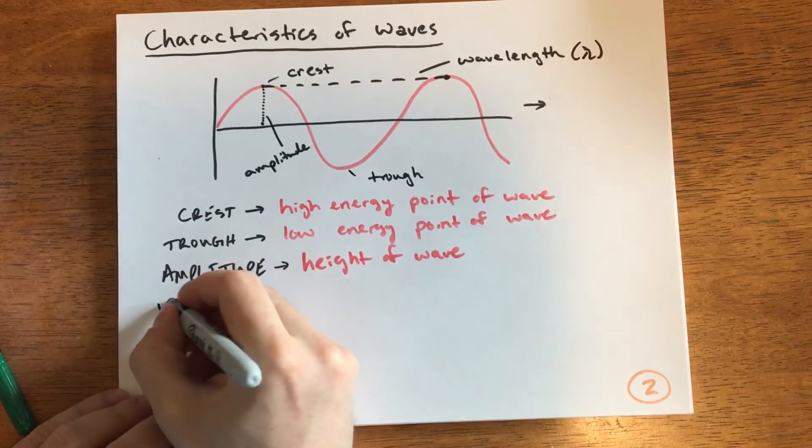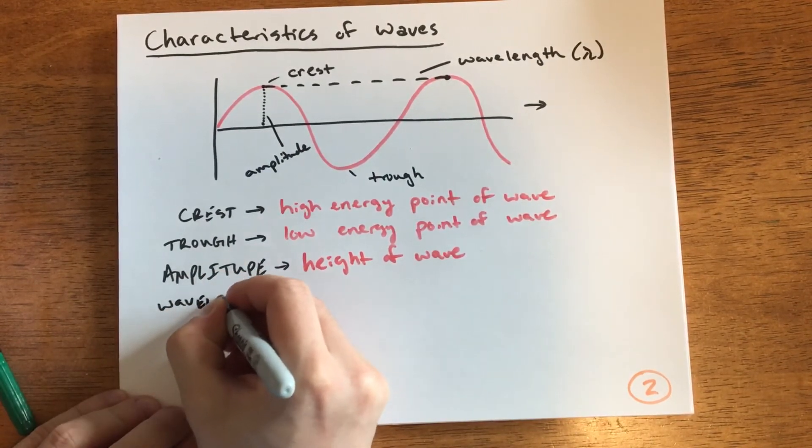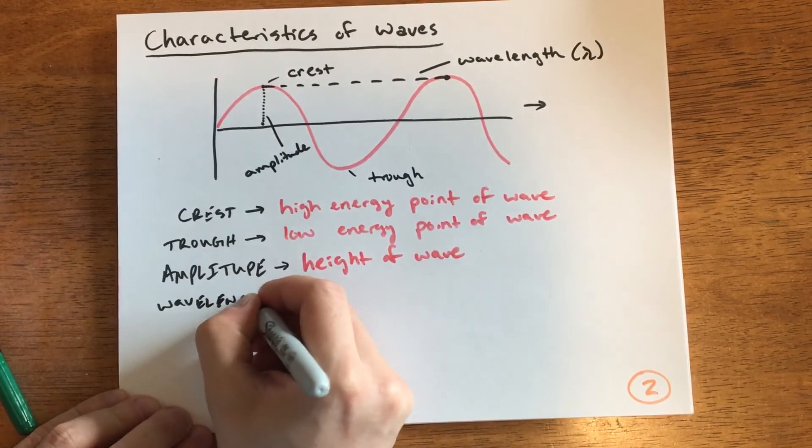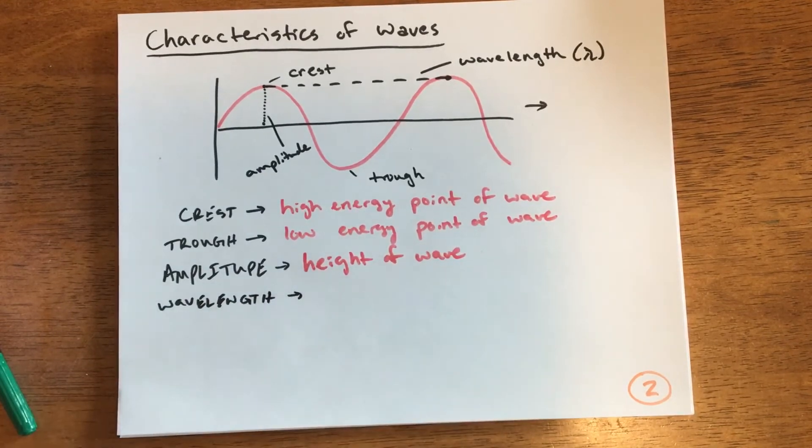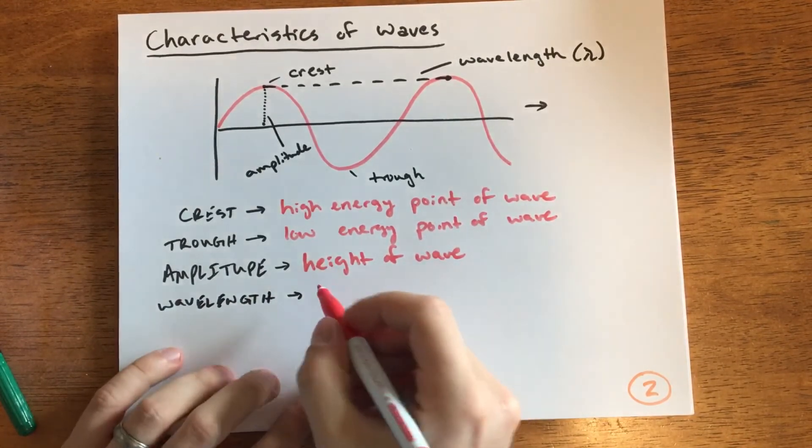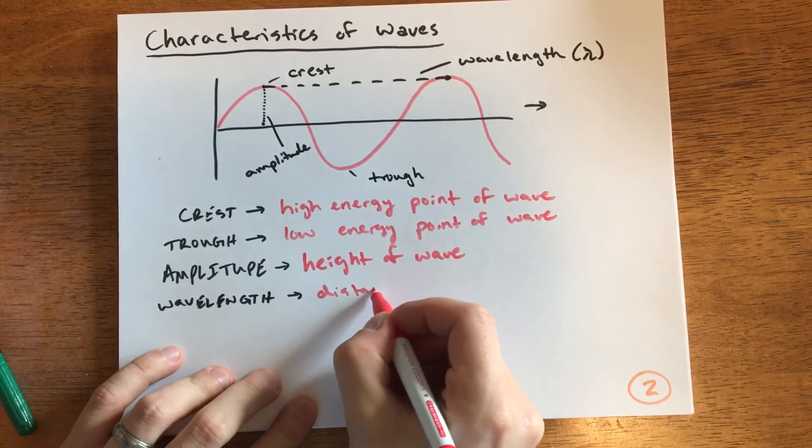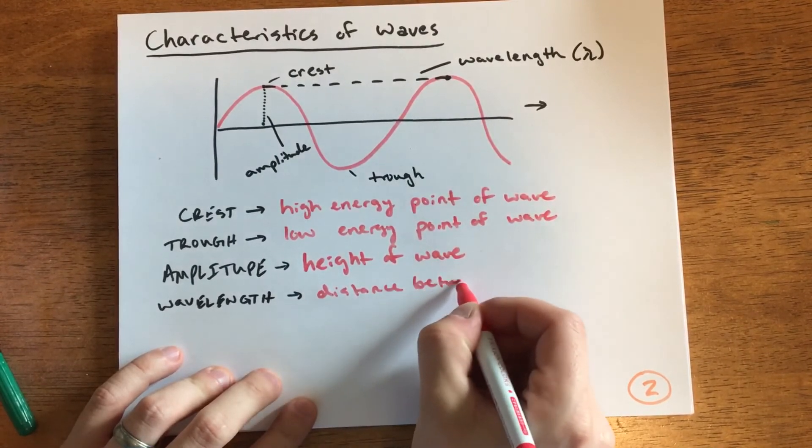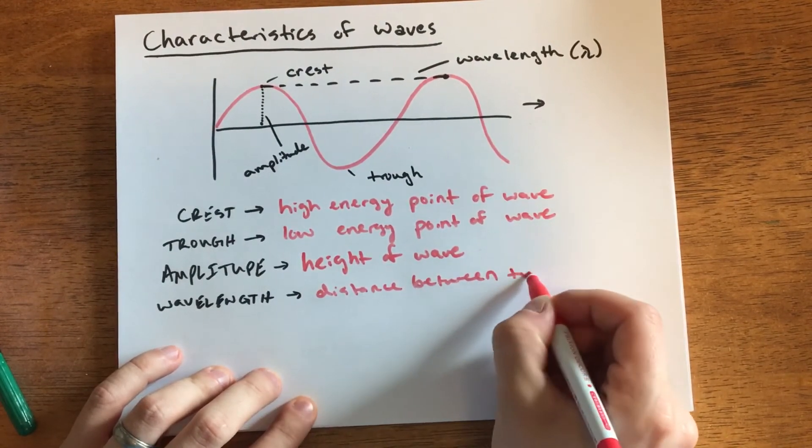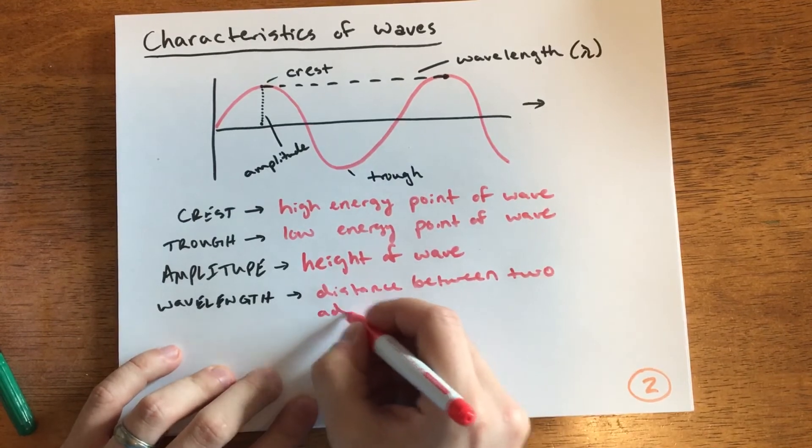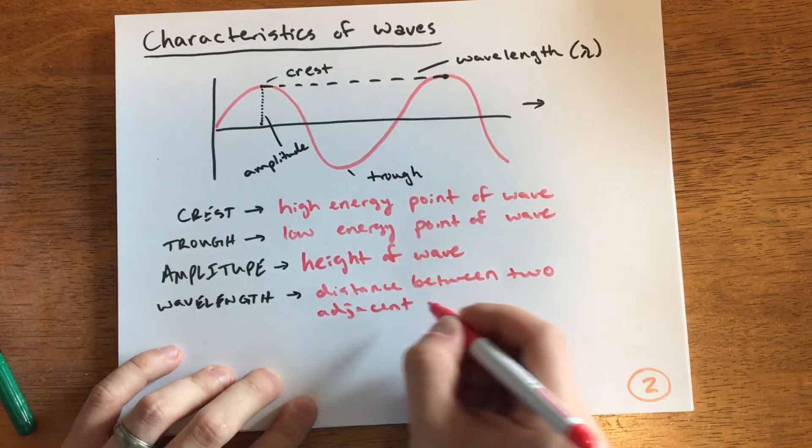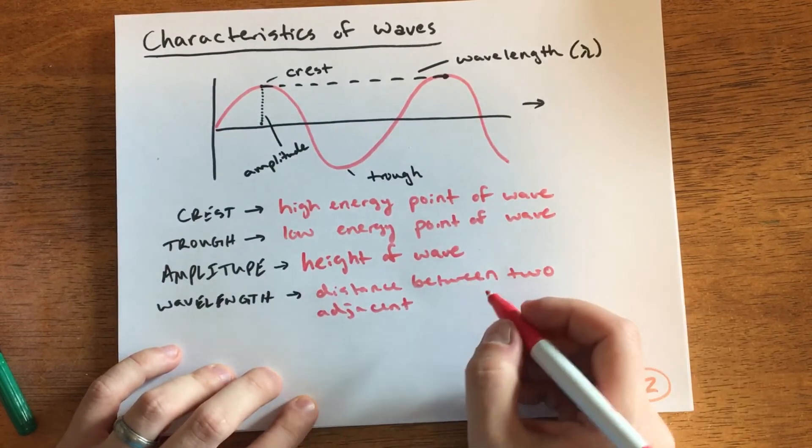Wavelength is the distance between two adjacent waves—how far apart they are. Adjacent just means next to each other, so it's two consecutive waves.